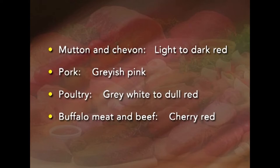Myoglobin content of more active species and muscles is higher than passive ones. Typical color varies: mutton and chevon are light to dark red, pork is grayish pink, poultry is gray-white to dull red, and buffalo meat and beef are cherry red. At the time of purchase, brown color is associated by consumers with meat stored for a long time, although this is not always true. To prevent brown color formation, fresh meat is usually packed in films with good oxygen transmission rate.